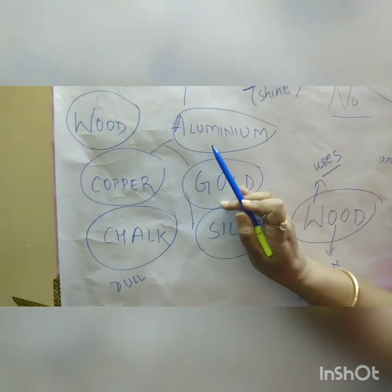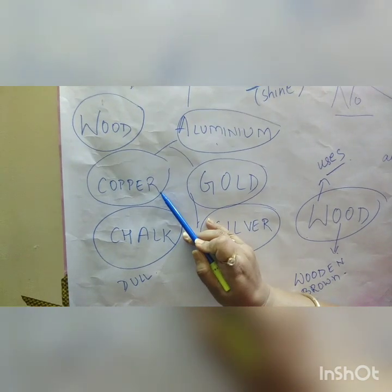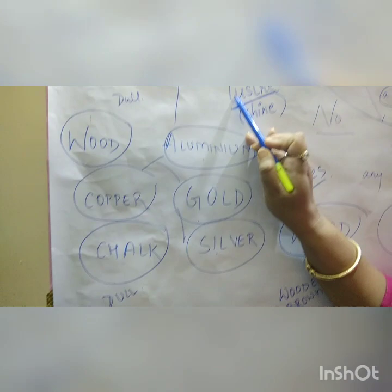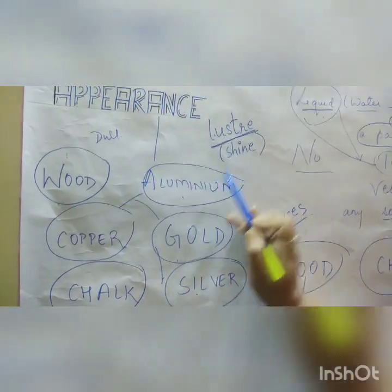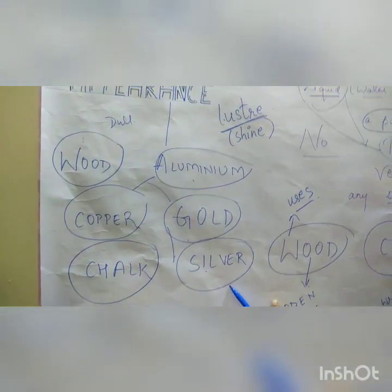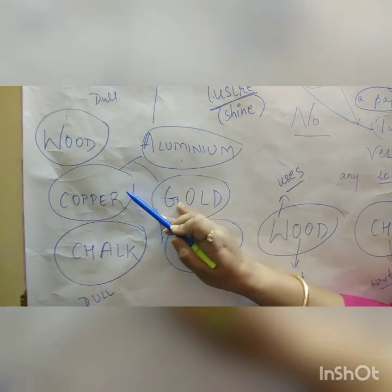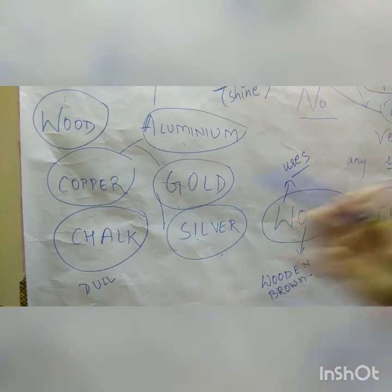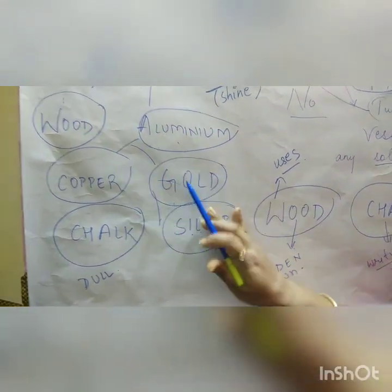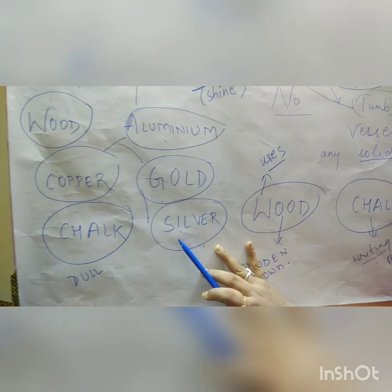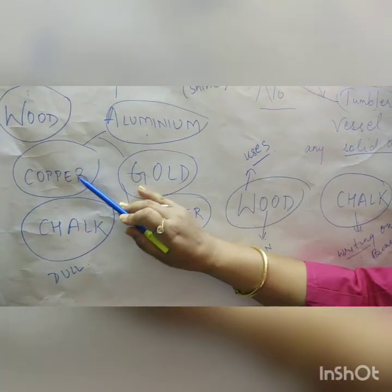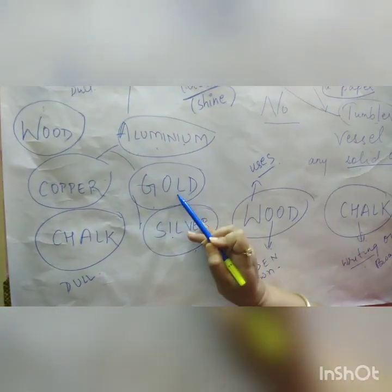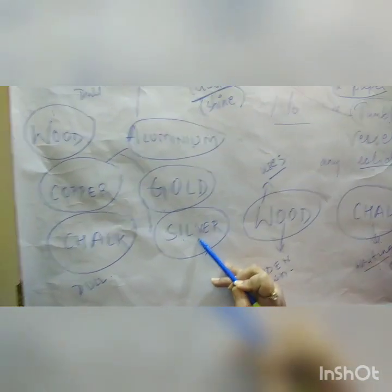The same thing applies here: aluminium, copper, gold, silver — their first common property is that they all have lustre, they are all shiny. But how do you find the difference? Look-wise, when you see them, you can easily see their appearance is different. Then their uses: copper is used for different purposes, aluminium is used for different purposes, gold and silver are used for different purposes.